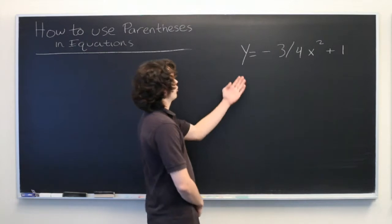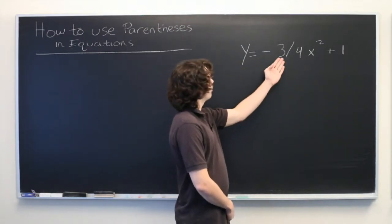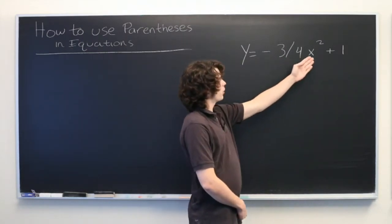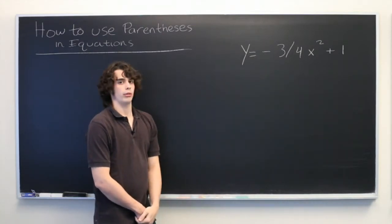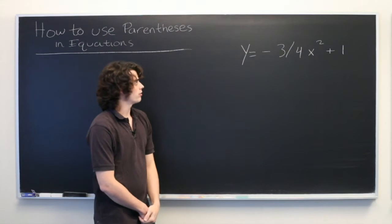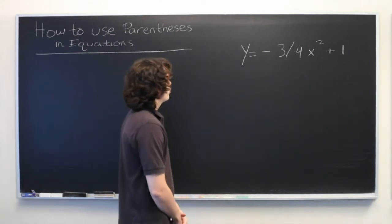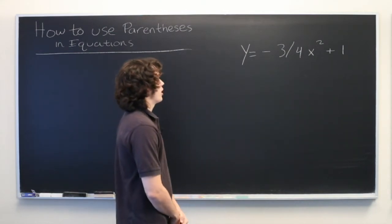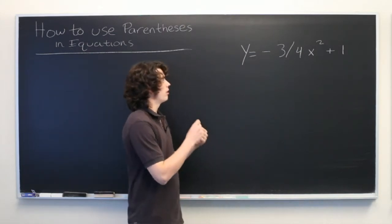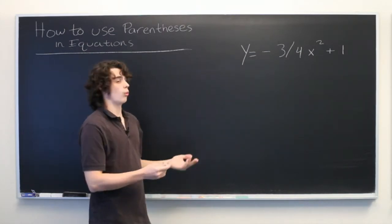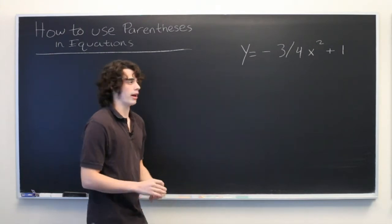So here we have an equation y equals negative 3 over 4 x squared plus 1. At first glance, it might not be immediately apparent what the correct order of operations is. So we want to use parentheses to try to make this somewhat less ambiguous. In order to do that, we need to consider what relationship we're trying to convey between y and x.